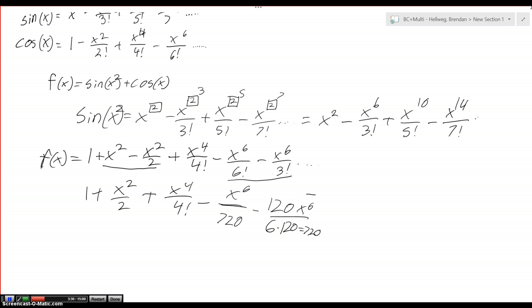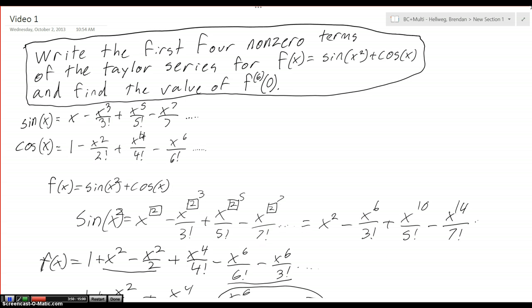So then I can cancel these two out and this all is going to be equal to minus 121 x to the sixth over 6 factorial. And this is particularly important because as we can see above we want to find f to the sixth prime of 0.